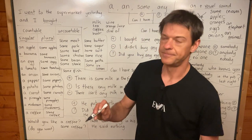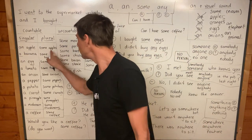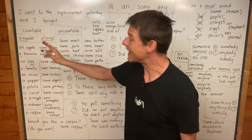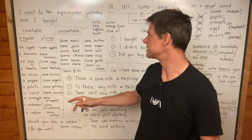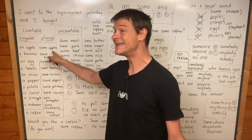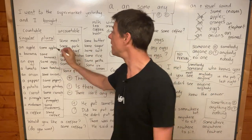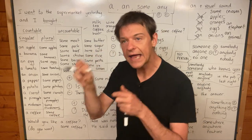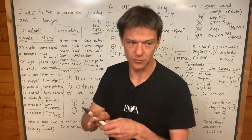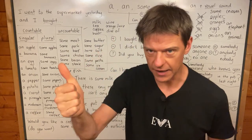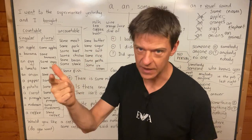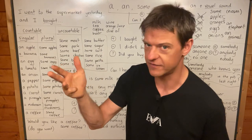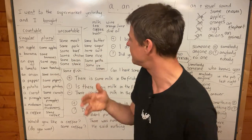Now, some nouns — apple, banana, egg, tomato — some nouns are countable. We can count apples: one apple, two apples, three apples, four apples, five apples.